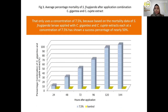Figure 3 shows the average percentage mortality of Spodoptera frugiperda using the combination extract. At a concentration of 7.5%, on day 6 after application, mortality reached 100%. This is because the secondary metabolites contained in C. gigantea are combined with the secondary metabolites contained in C. dujete, so that the results show the mortality of Spodoptera frugiperda larvae is higher and faster.